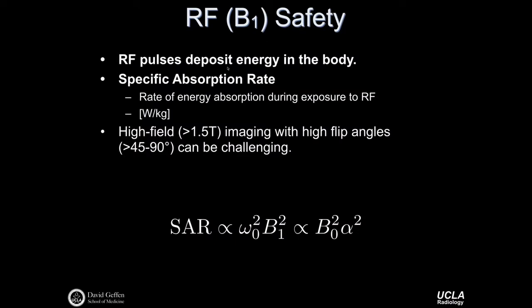Moving to the B1 field: the radiofrequency pulses and B1 pulses used to excite spins also deposit energy in the body. We measure this in terms of the specific absorption rate — the rate of energy absorption during exposure to radiofrequency energy, measured in watts per kilogram. Depositing too much energy is limited by FDA guidelines. High field systems greater than 1.5 T, imaging with high flip angles of 45 or 90 degrees, especially with short repetition times, can be challenging. When repeating RF pulses with great frequency — TRs of 5 or 10 milliseconds with intermediate or high flip angles — the SAR can be quite high.